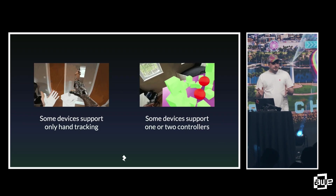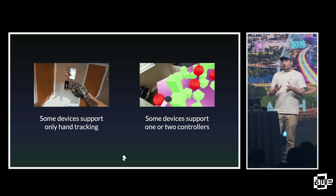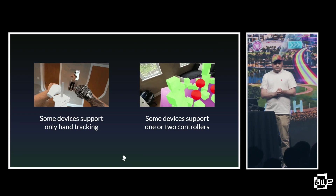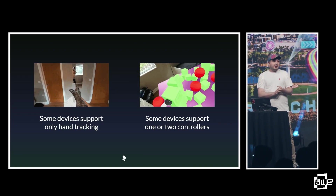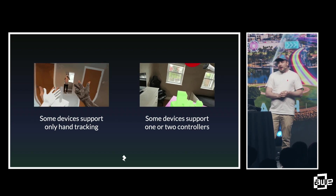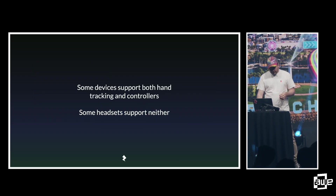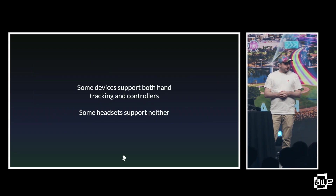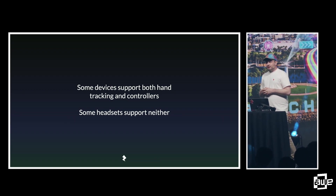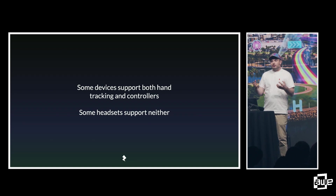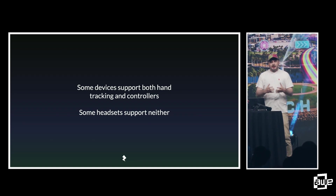Some devices support only hand-tracking — looking at you, Apple Vision Pro. Some devices support one or two controllers: Magic Leap typically has one controller, while Quest and Pico have two. Some devices support both hand-tracking and controllers, such as Quest and Pico, which creates its own challenge: if you're deploying content for those devices, you have to know whether the user will be using hands or controllers and tailor the experience to work in both cases.